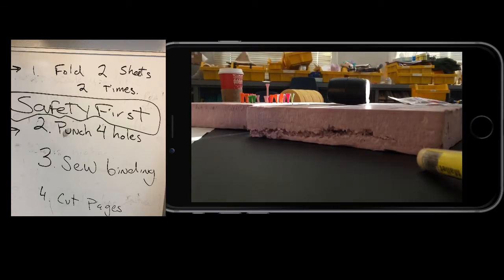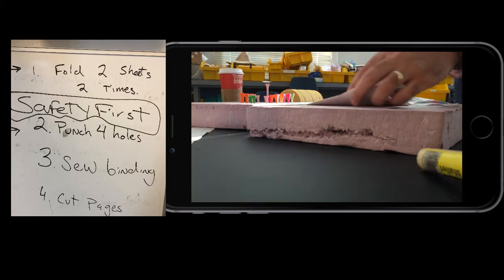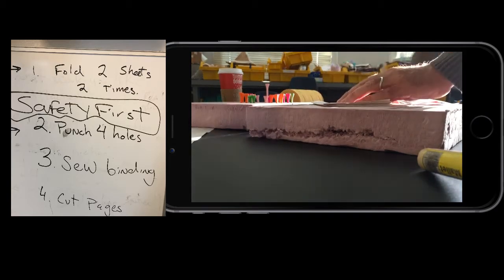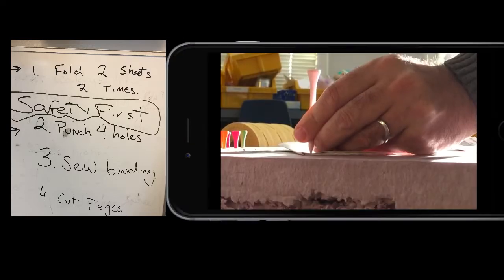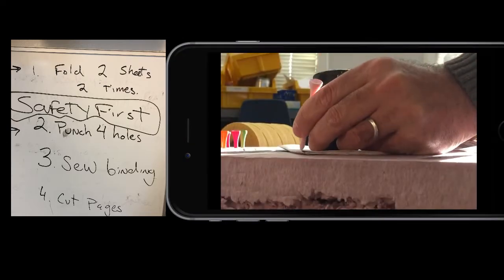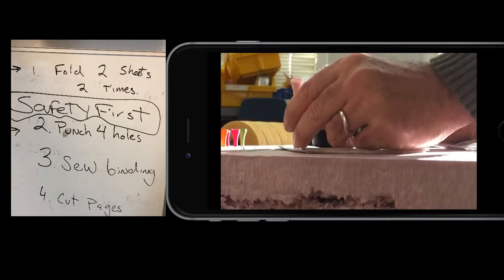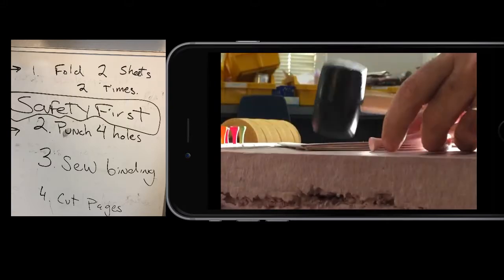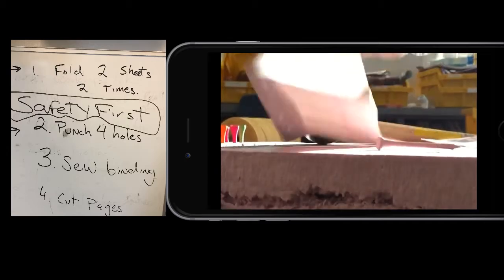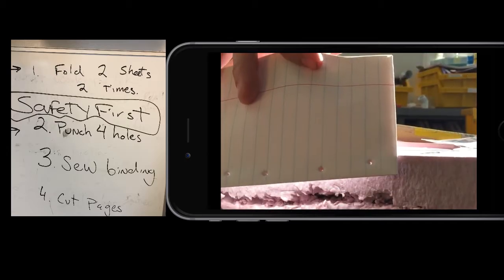I've got some construction insulation foam here and I'm going to use a golf tee and a mallet to poke these binding holes. I'm super comfortable that my first graders can do that safely. I just made four holes.